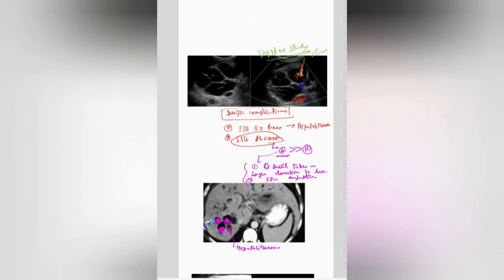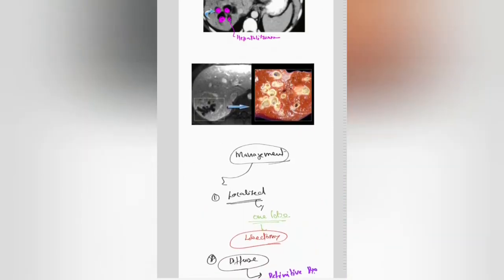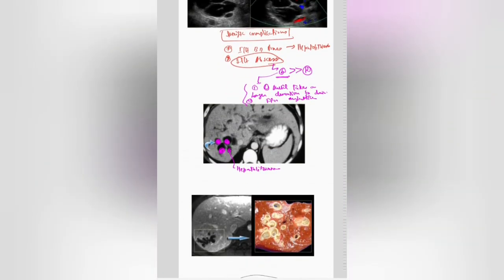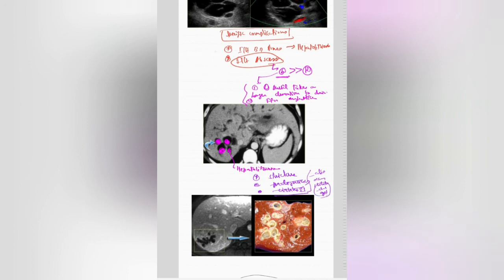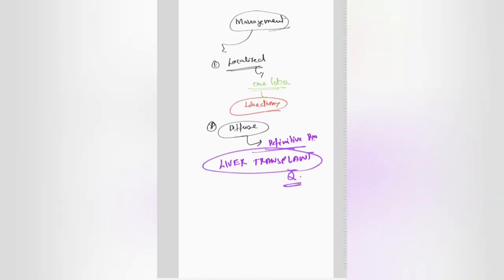If you do Doppler, you can find the flow in the portal radical. We have dealt with the specific complications of Carole's disease. Apart from these two specific complications, it can also undergo stricture formation, malignancy, and cirrhosis. All these complications can also occur in choledochal cysts — remember this. The two specific complications are unique to Carole's disease.